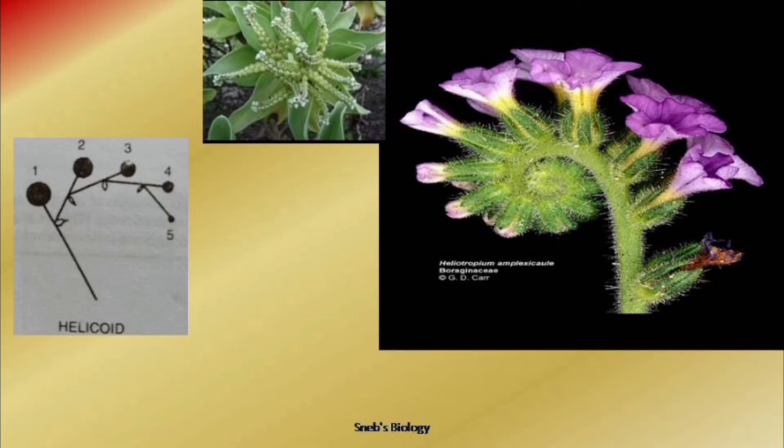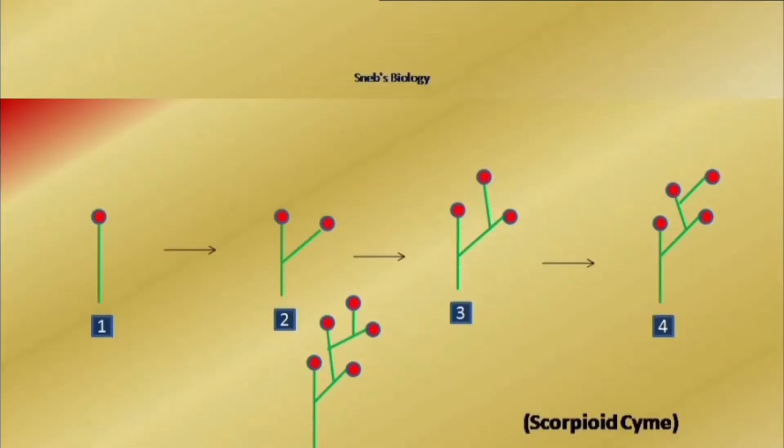Helicoid type of inflorescence is seen in the Solanaceae family, Heliotropium, etc.